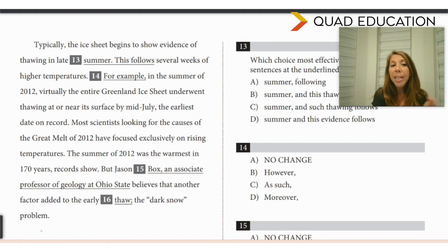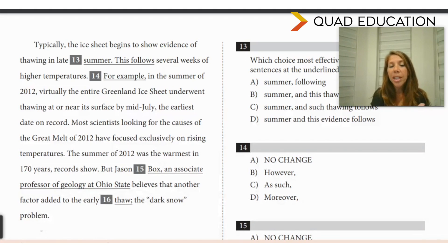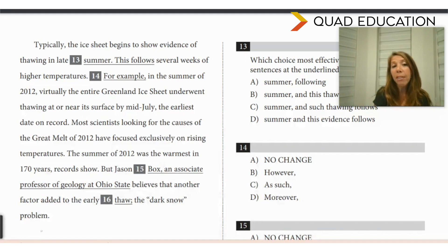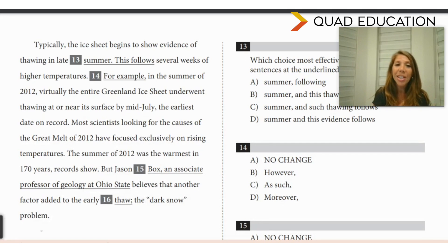If the two sentences contradict each other, then we would choose words such as however, despite, although. If the second sentence is a consequence or result of the first sentence, we would choose words like as a result, consequently, therefore, thus.